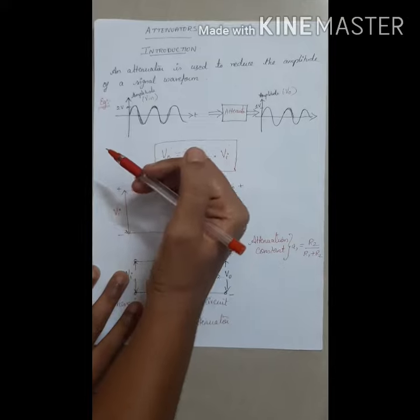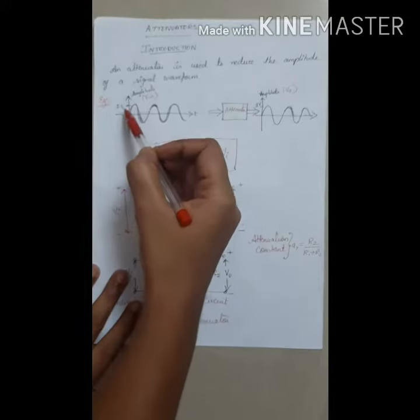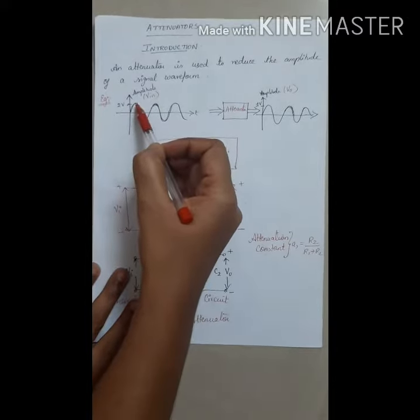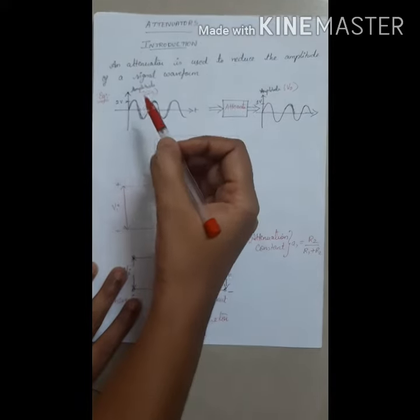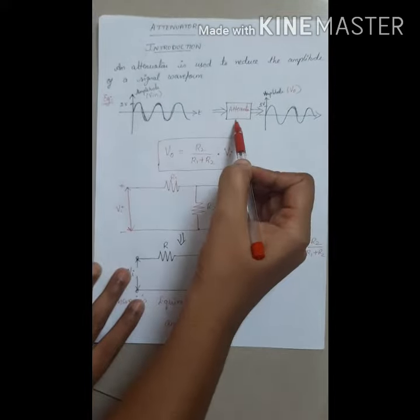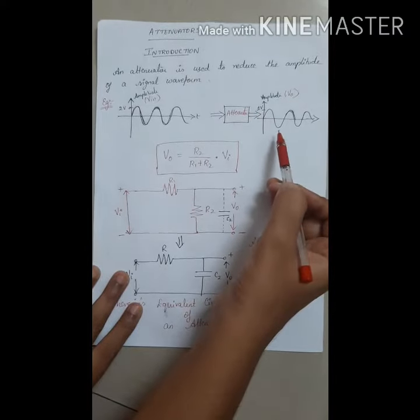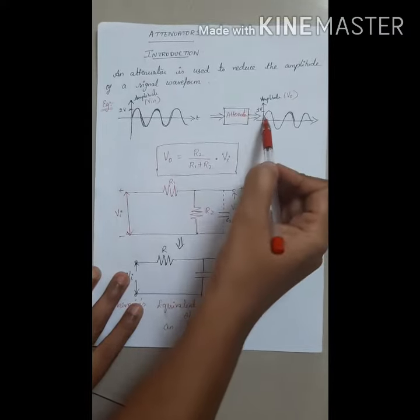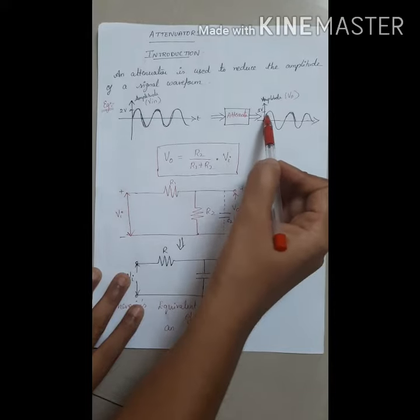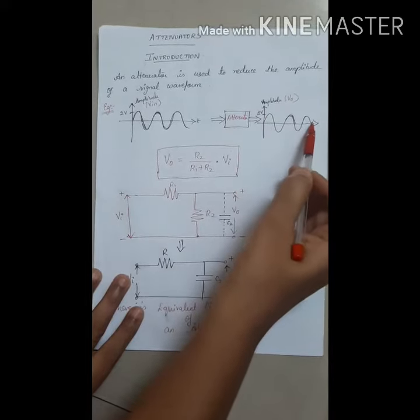For example, if the amplitude of a sine wave is 2 volts and we give this as input to the attenuator, it attenuates and gives the output with reduced amplitude for which it is designed. So it can be below 2 volts. This will be the output.